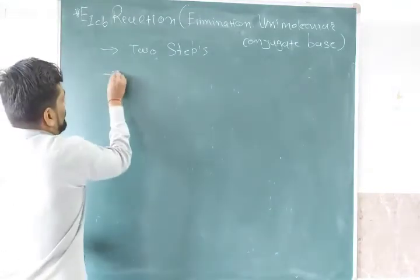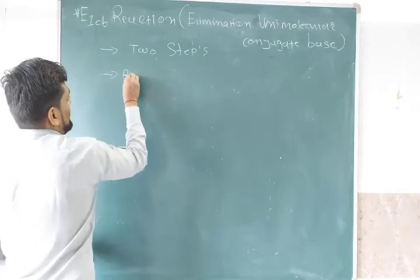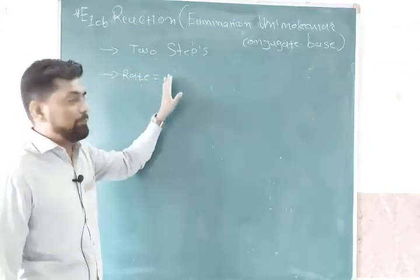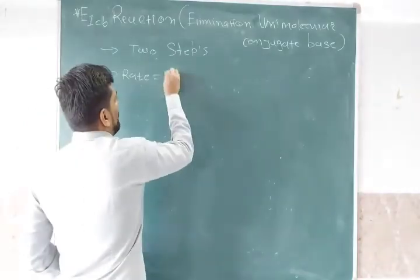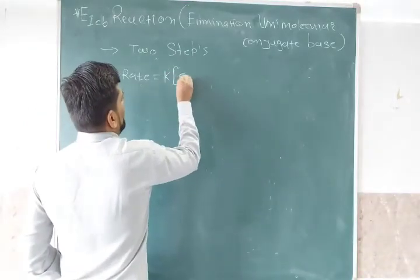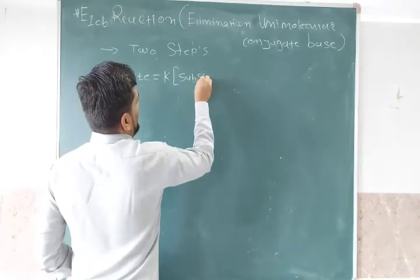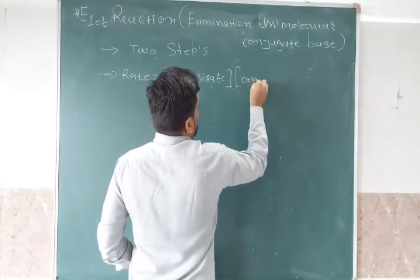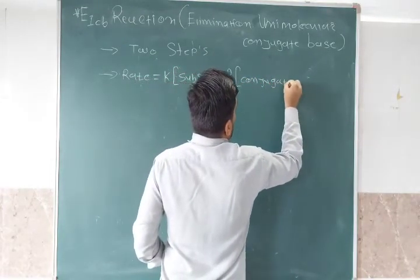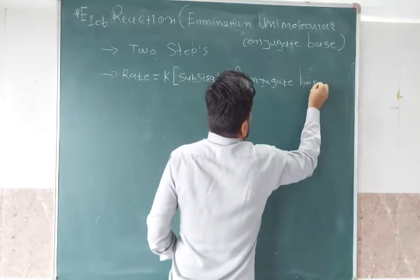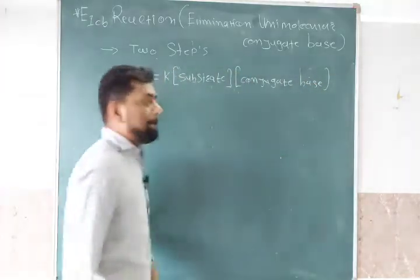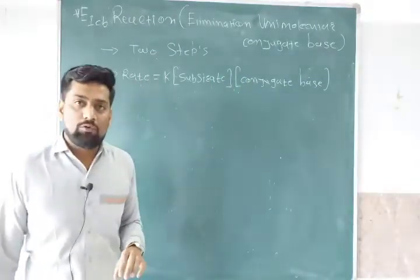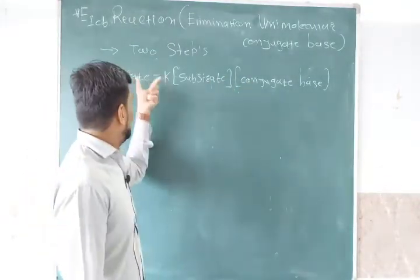The rate of reaction for E1CB is directly proportional — the rate equals K, the proportionality constant. This rate of reaction is dependent on the substrate as well as the conjugate base. So the substrate and conjugate base concentration both affect the rate of reaction.